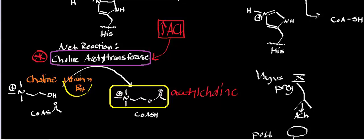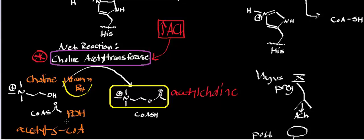Choline can also be salvaged through the Kennedy pathway, which can be used to make phosphatidylcholine and similar molecules. Humans do have the enzymes to make choline, but not in sufficient quantities, so it's basically considered one of the B vitamins. The second substrate is acetyl-CoA, which is made from pyruvate by the pyruvate dehydrogenase complex, sometimes abbreviated PDH.